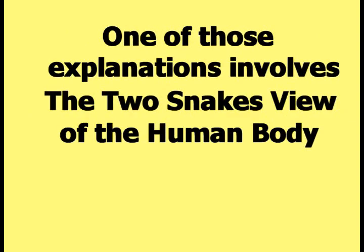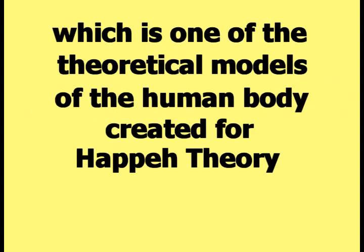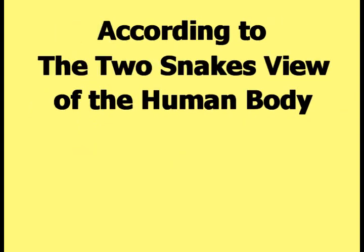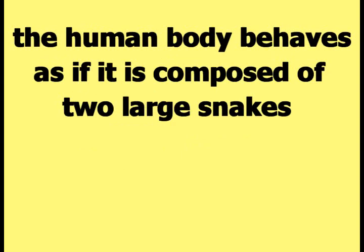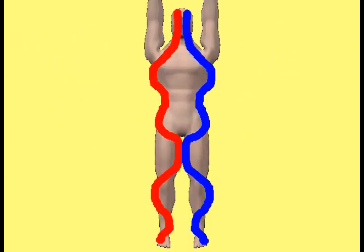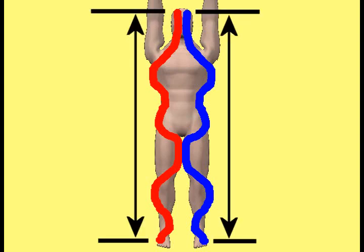One of those explanations involves the two snakes' view of the human body, which is one of the theoretical models created for Happy Theory. According to this view, the human body behaves as if it is composed of two large snakes, located approximately as shown in this picture. The head of each snake lies within the human head, and the tail of each snake is located within the foot. The body of each snake follows a wave-shaped path from the feet up to the head.